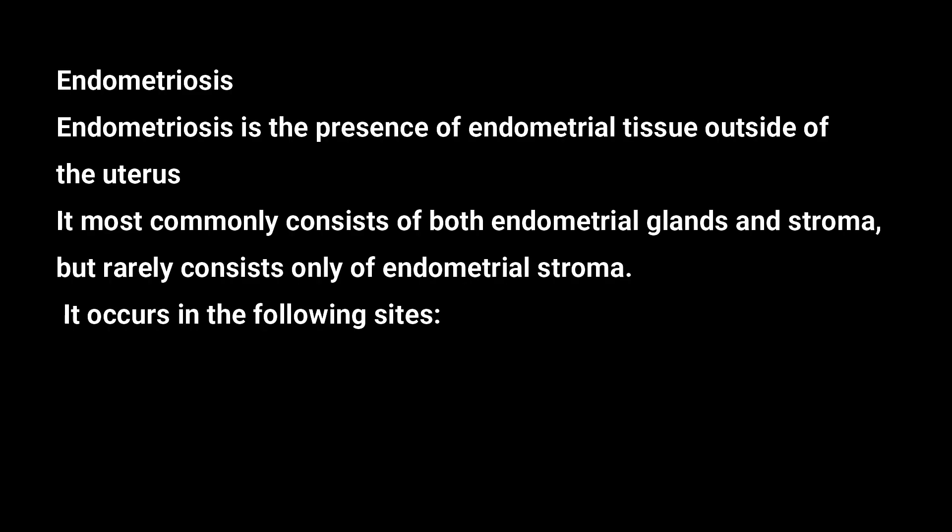Next, we move to endometriosis and adenomyosis. Endometriosis is the presence of endometrial tissue outside the uterus, whereas adenomyosis is the presence of endometrial tissue deeper into the myometrial muscle. Most commonly, both endometrial glands and endometrial stroma are present in endometriosis, but rarely it consists of endometrial stroma only.